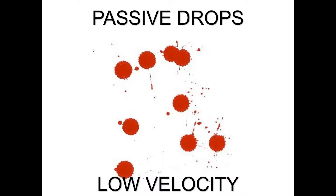Low velocity spatter dropped at a 90-degree angle is a passive or gravitational drop. You can see some spikes and spines and a few satellites. Where one drop existed and then a second drop added energy to it, you get more satellites and spikes formed. These stains look different depending on the surface: blood dropped on a smooth surface produces a more circular pattern, while a porous surface like concrete creates more spikes and spines.